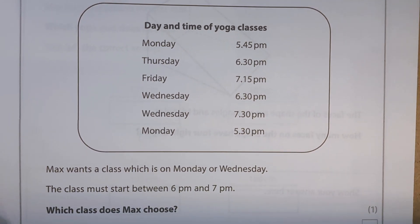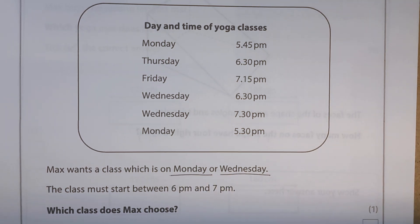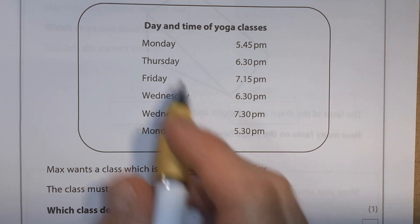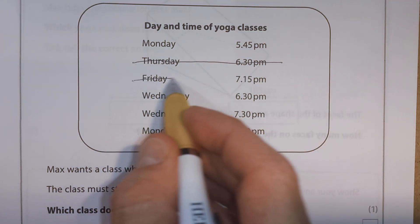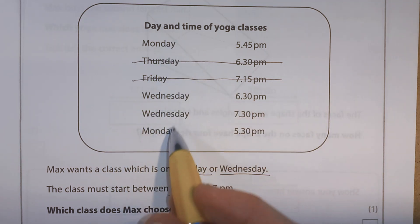The class must start between 6pm and 7pm. Which class does Max choose? We want a Monday or a Wednesday. So this one's no good, it's a Thursday. This is no good, it's a Friday. Monday, Wednesday, Wednesday, Monday. So those ones look alright.